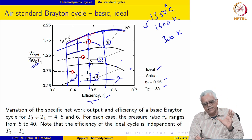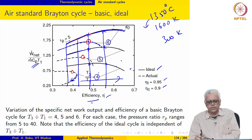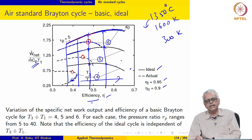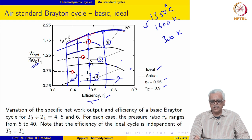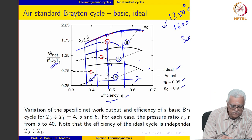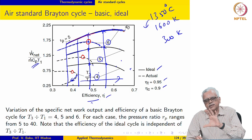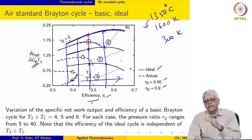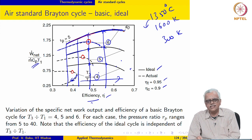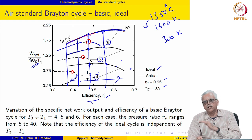Whatever trends we saw with the ideal cycle, we are seeing in the actual cycle also. The assumption we have still not relaxed is that we are assuming the air to be calorically perfect. That is actually not realistic in the present application because the temperature ranges from 300 Kelvin to 1600 Kelvin — a wide range — and assuming Cp and Cv to be constant in this range is unrealistic. So we need to relax that assumption, which we will do next.